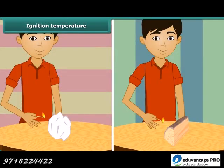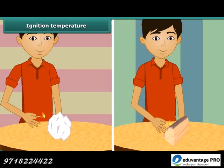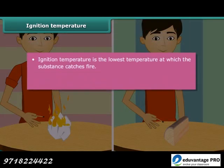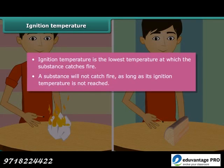We just saw that paper burns when lighted with a matchstick. Now bring the matchstick close to a piece of wood — the piece of wood does not catch fire. One lighted matchstick is not able to burn the piece of wood, but a piece of paper burnt quickly. This is because the piece of wood has not reached its ignition temperature. Ignition temperature is the lowest temperature at which a substance catches fire.